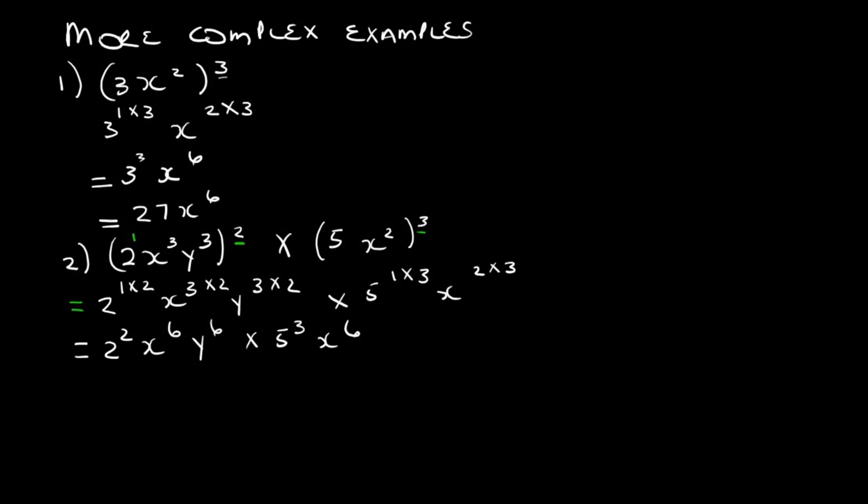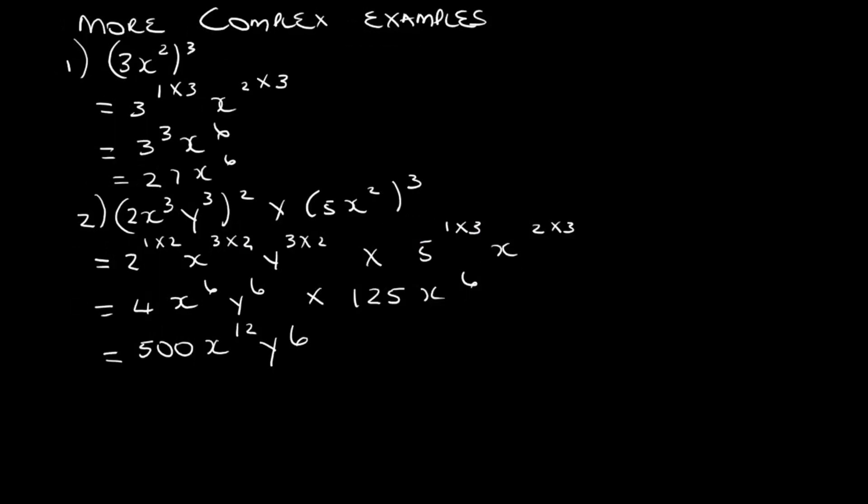2 to the power 2 is 4, and 5 to the power 3 is 125. 4 times 125 is 500.